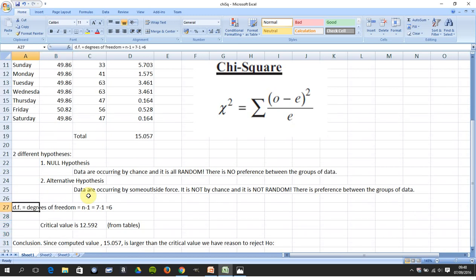You have to go and test this. The degrees of freedom is n minus one. How many rows were there, how many groups are there, how many classes? So there are seven days in the week, so n minus one, seven minus one is six.